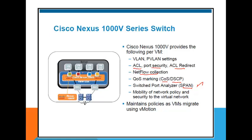With SPAN, we take traffic coming from a virtual port and analyze what is going on at that particular port. We can take a mirror copy of traffic coming and going inside this virtual port (vNIC) and analyze it somewhere outside. That is supported after 1000V. And then mobility of network policy and security to a virtual network is also supported.